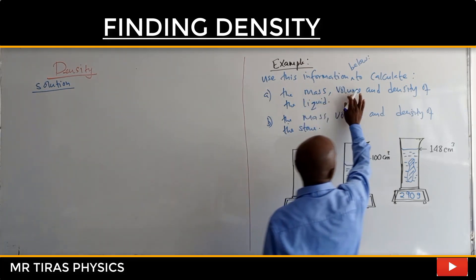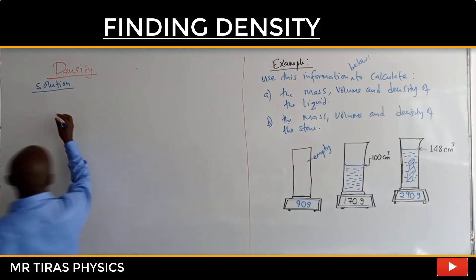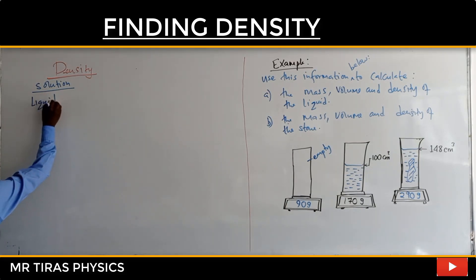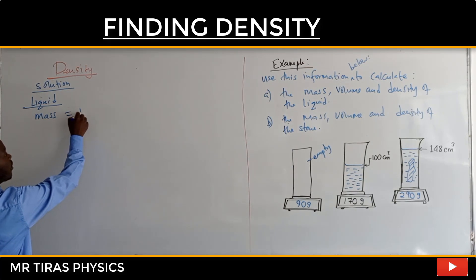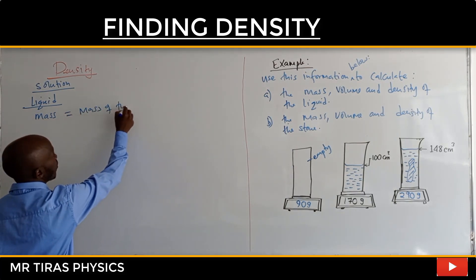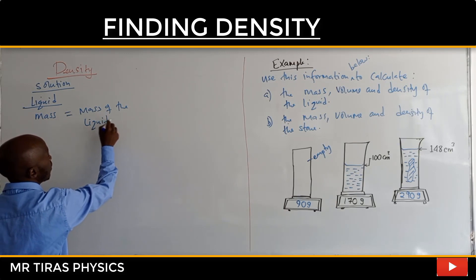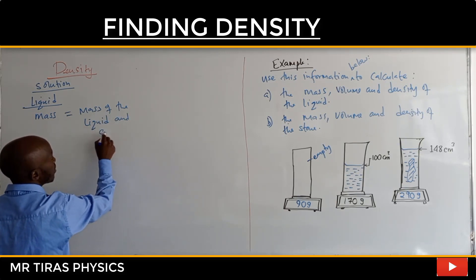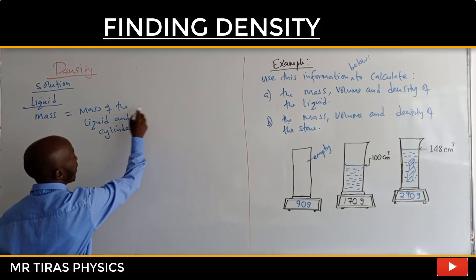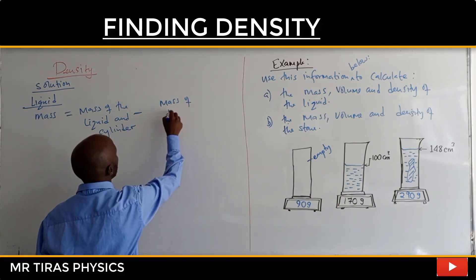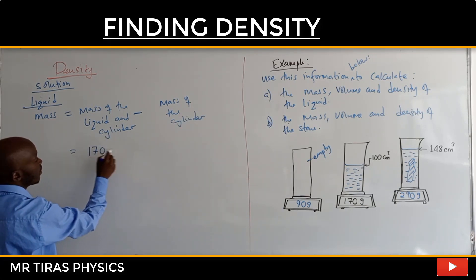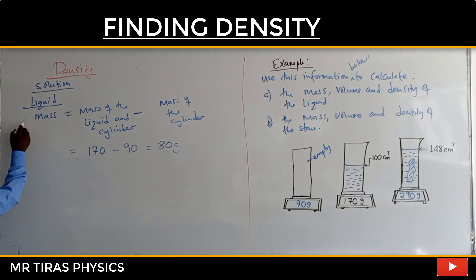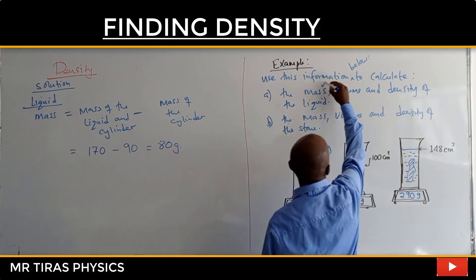The question is asking for the mass, volume, and density of the liquid. For the liquid, the mass equals the mass of the liquid and cylinder minus the mass of the cylinder. So this will be 170 minus 98 grams.